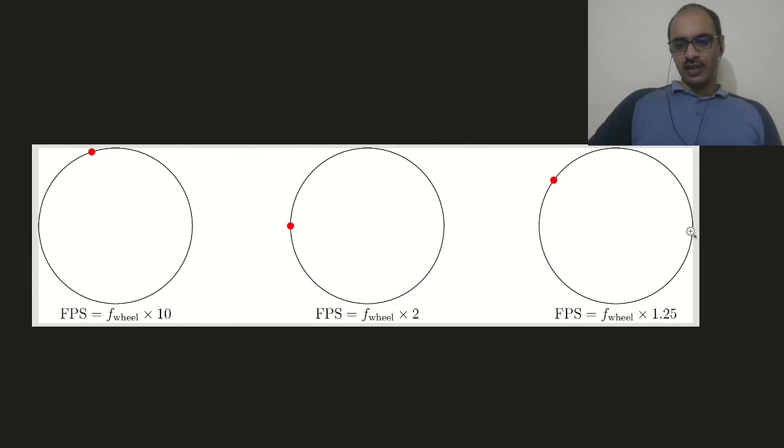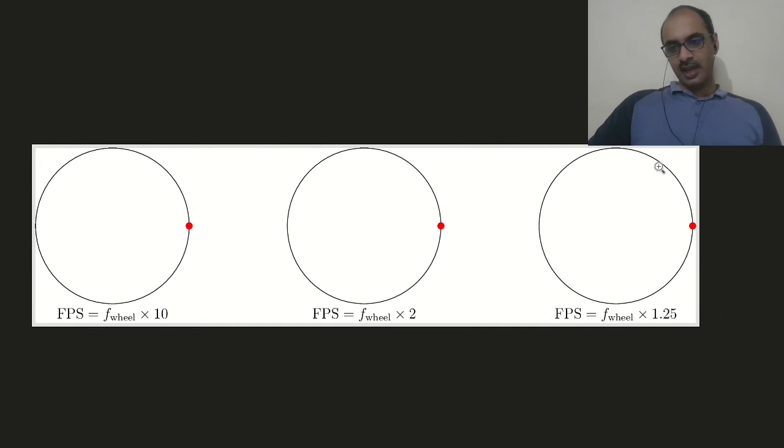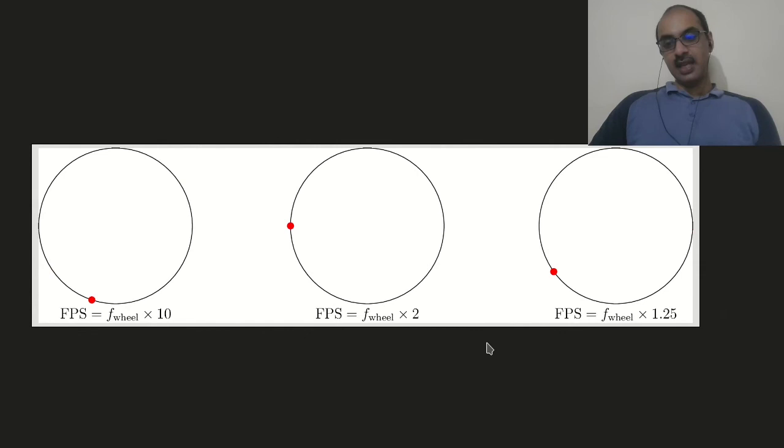So if the red dot is over here and then it moves 80% to come before the next photo is taken, and then it moves 80% again, which means that what you end up seeing is the red dot moving backward. It seems to move backward and the rotation is not faithfully captured. This is called the wagon wheel effect and in a more technical term, this is called aliasing.